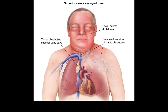Veins have thin walls and are easily compressible. Because of that, the superior vena cava can be easily compressed by masses affecting the surrounding structures — for example, bronchogenic carcinoma or lymphoma arising from lymph nodes.